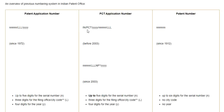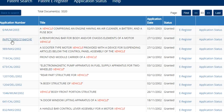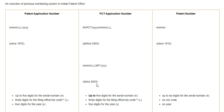For the PCT application number format before 2003, the structure was 4Y/5N/3L — year of filing first, then serial number, then office code. For example: 2002 is the year of filing, 2164 is the serial number, and CH is the office code.